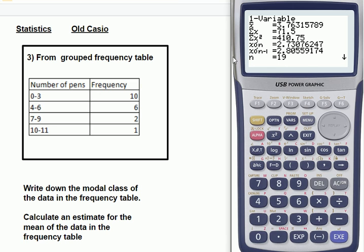The mean, an estimate of the mean is this X with the little bar over the top. You say X bar. So, to three significant figures, the mean number of pens of the people, of the 19 people in this survey, is 3.76 pens.